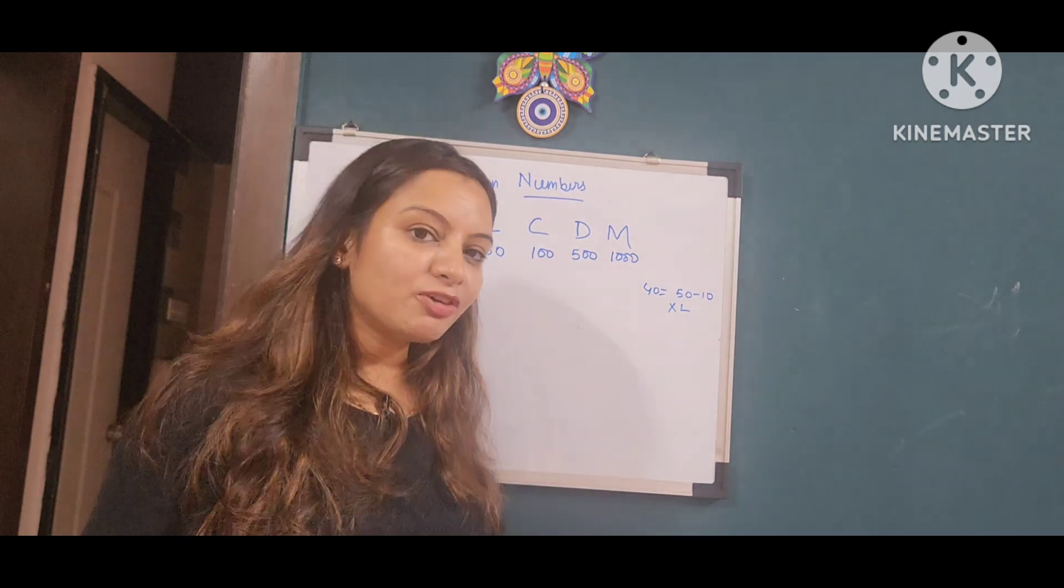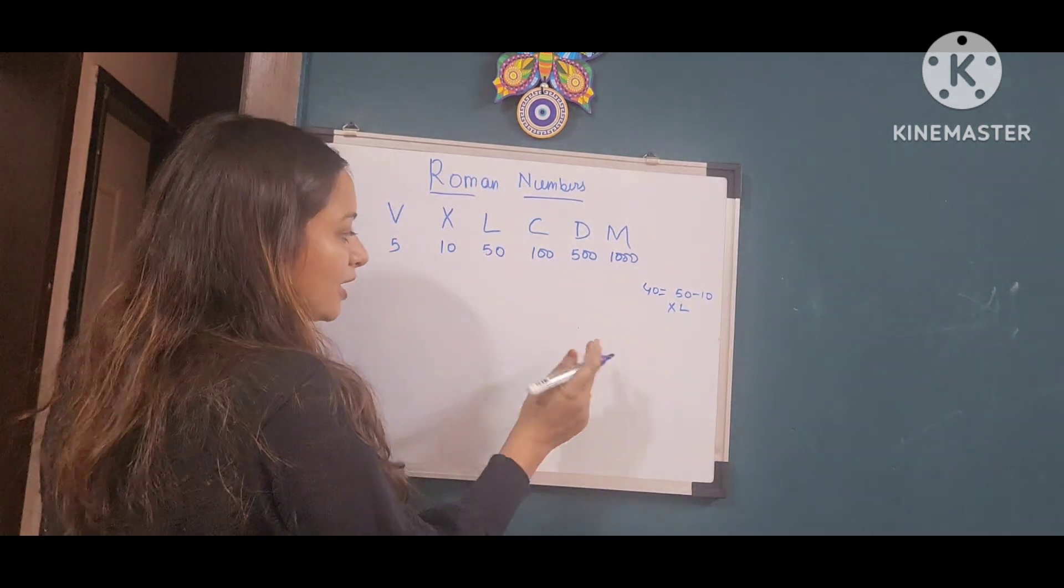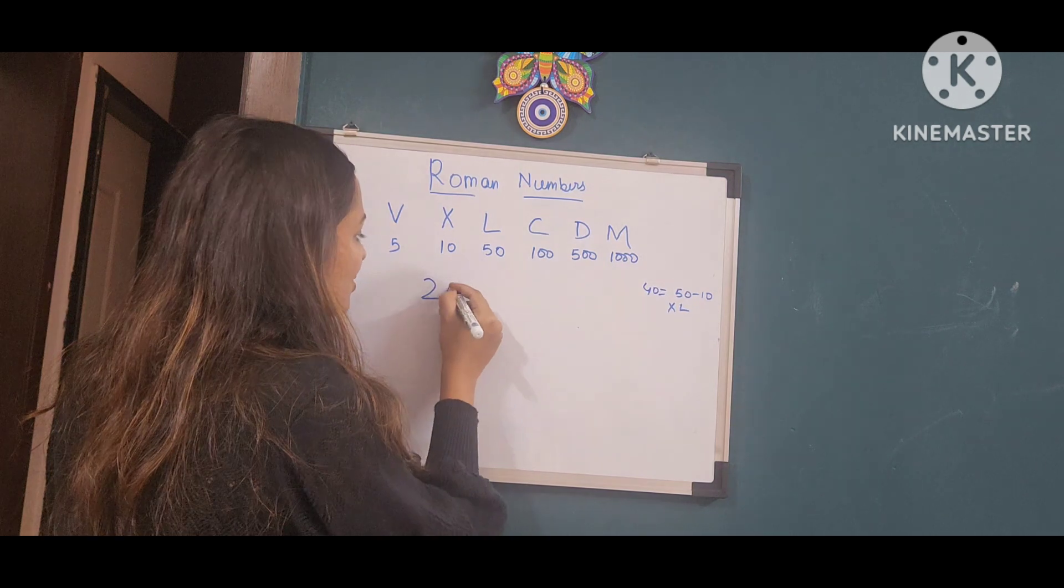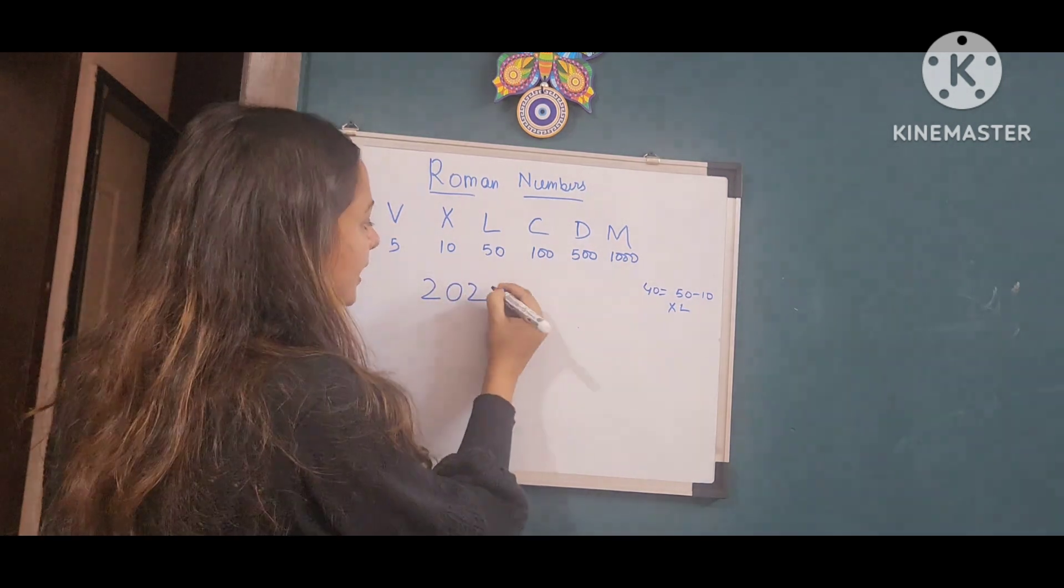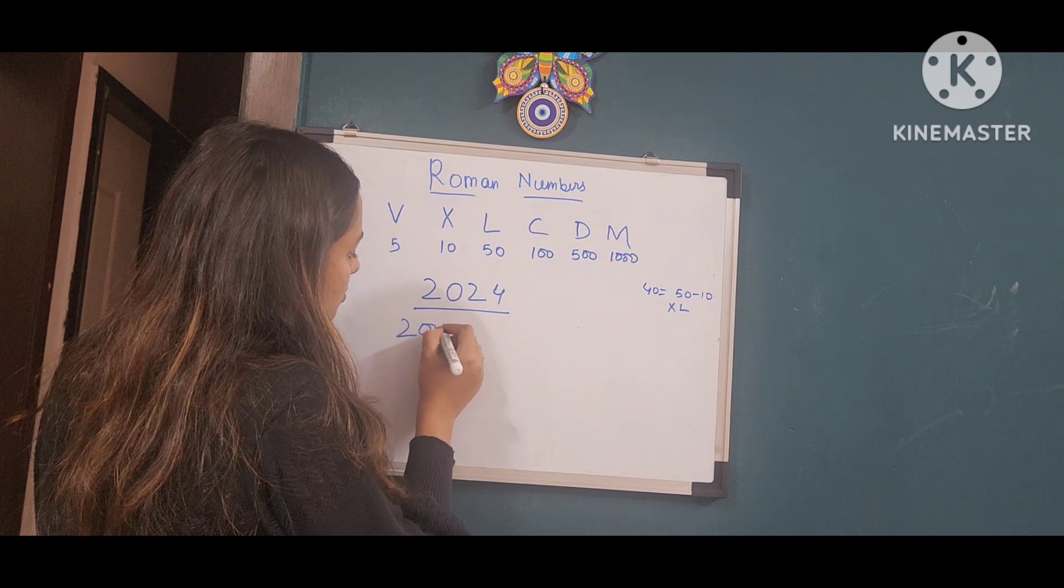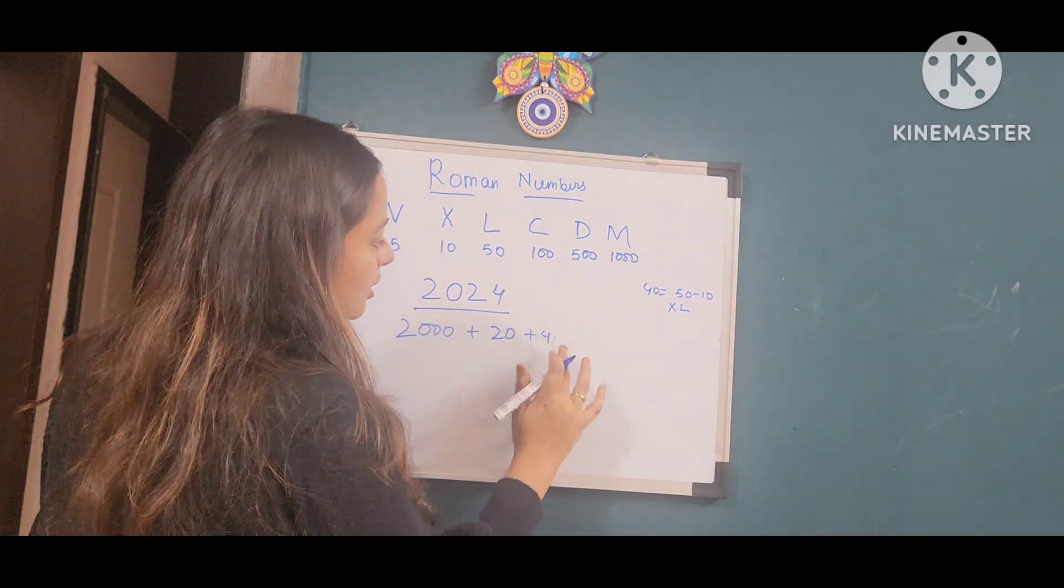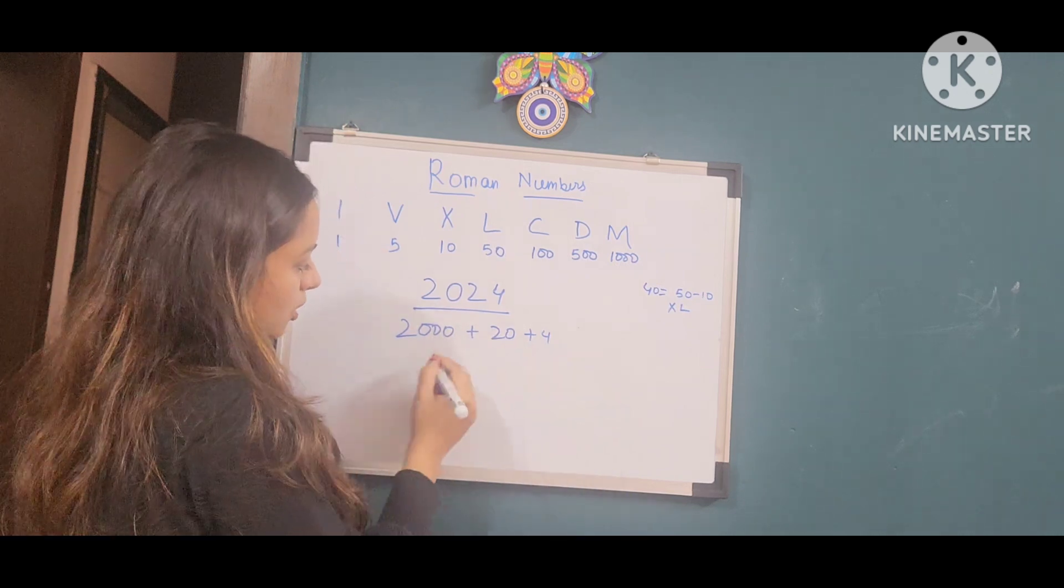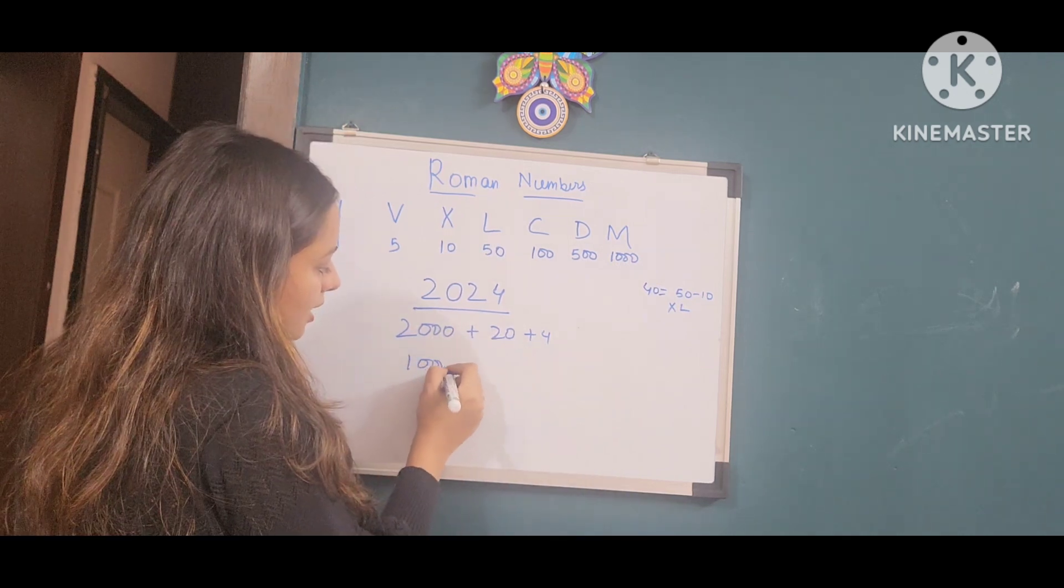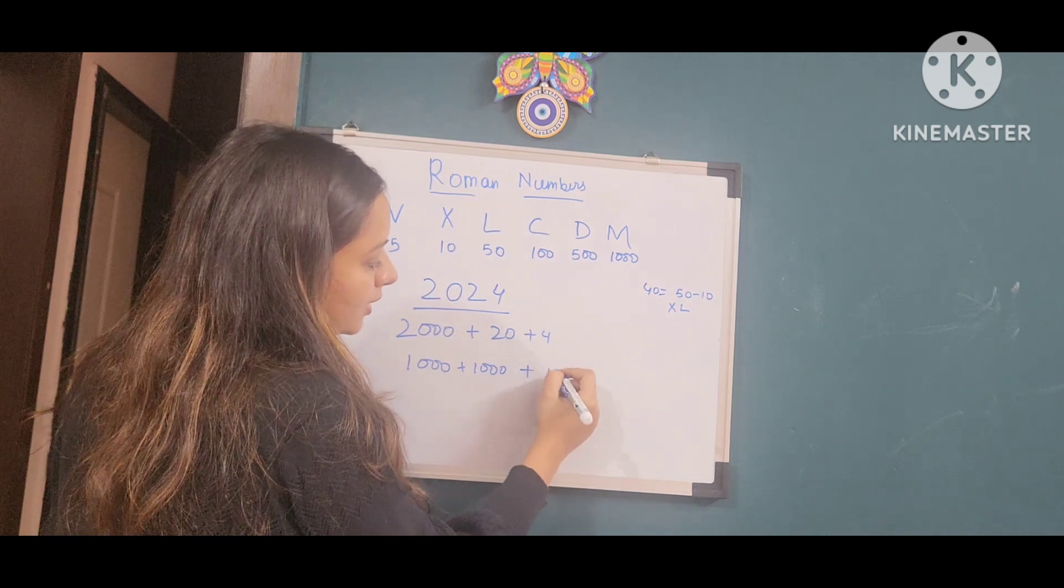Let's take an example for thousands. Suppose we have to write 2024, this is our year. How will we write 2024? First, we break 2024 into 2000 plus 20 plus 4. We break 2000 into 1000 plus 1000. We break 20 into 10 plus 10.